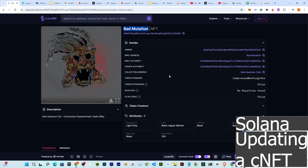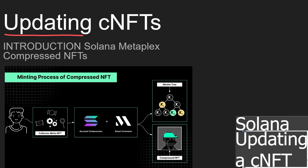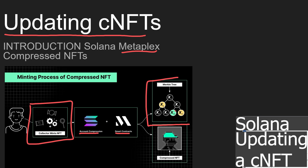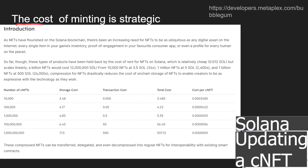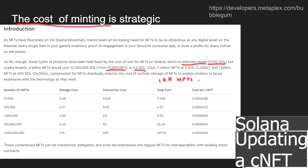Welcome to this intro for updating cNFTs with Metaplex. The idea is that the collector can mint using account compression with smart contracts to create the Merkle tree and mint compressed NFTs. The cost is very important: minting 10,000 NFTs with cNFTs costs only 3.5 SOL, whereas a normal mint would cost 10,000 times 0.012 SOL — that's 120 SOL.